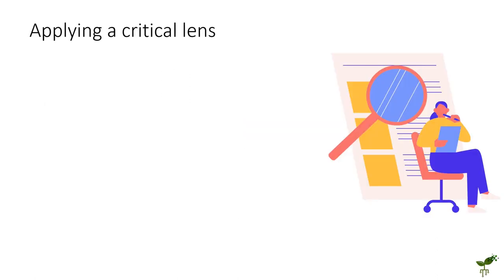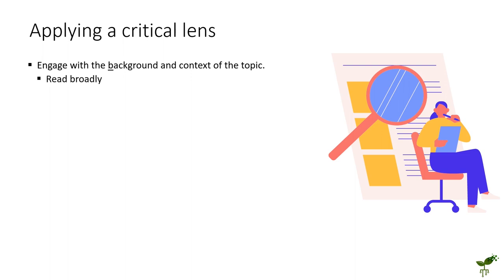When doing research, it's also really important to apply a critical lens over what you're doing. You can do this for the research papers as a whole, or you can critique each individual section as you read it. When engaging with the background and context of a topic, it's really important to think broadly — think beyond just the individual article. You can do this by reading broadly and engaging with other sources. Understand the topic as a whole and see where it fits in using other sources if necessary.